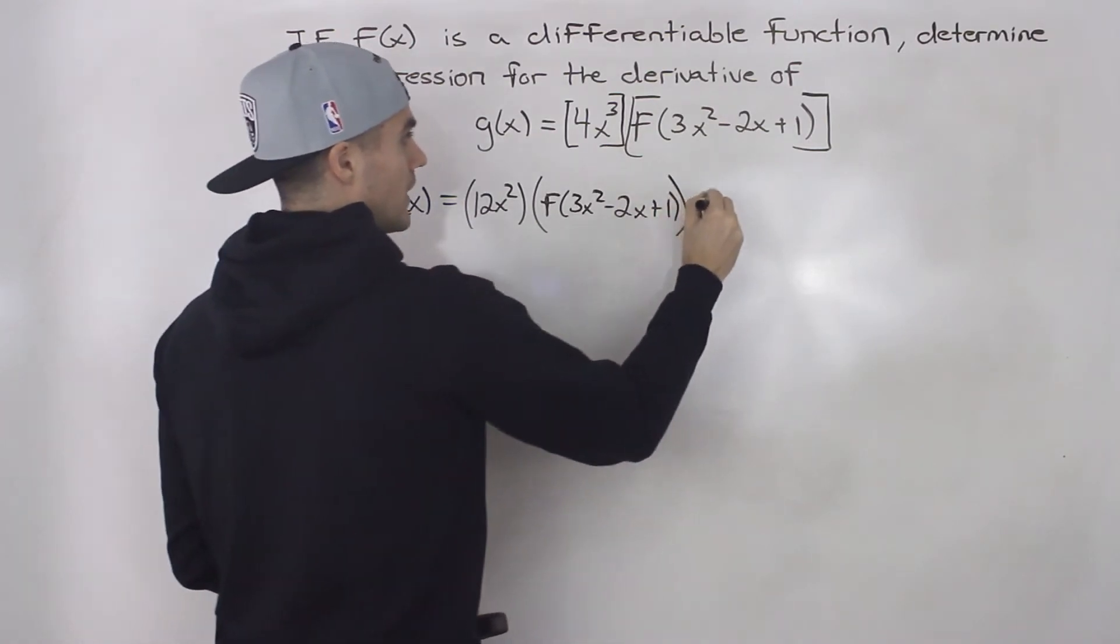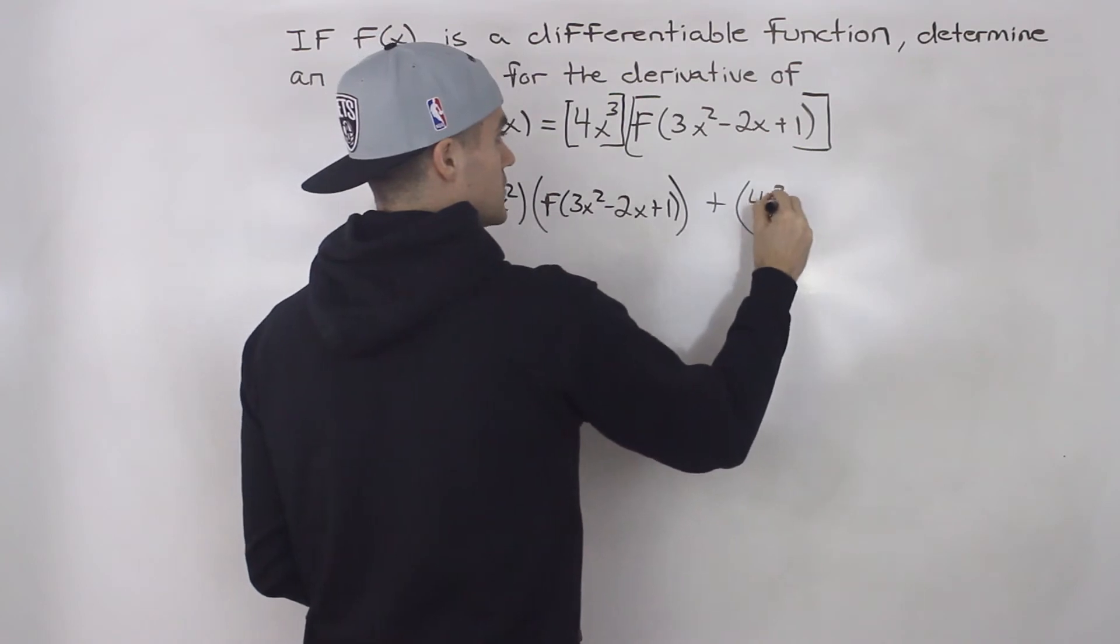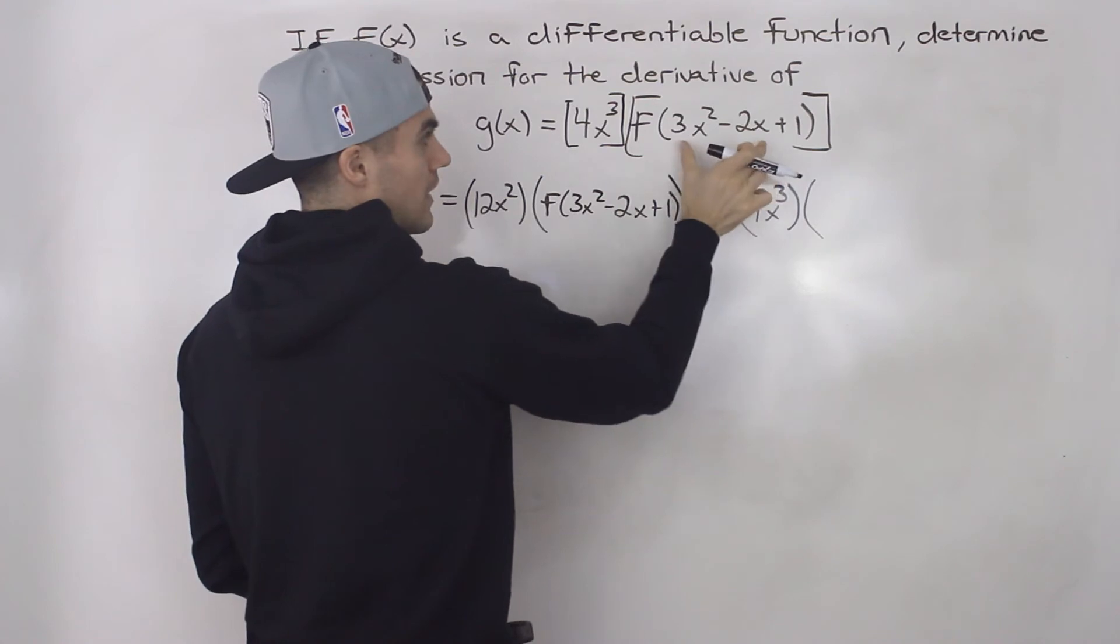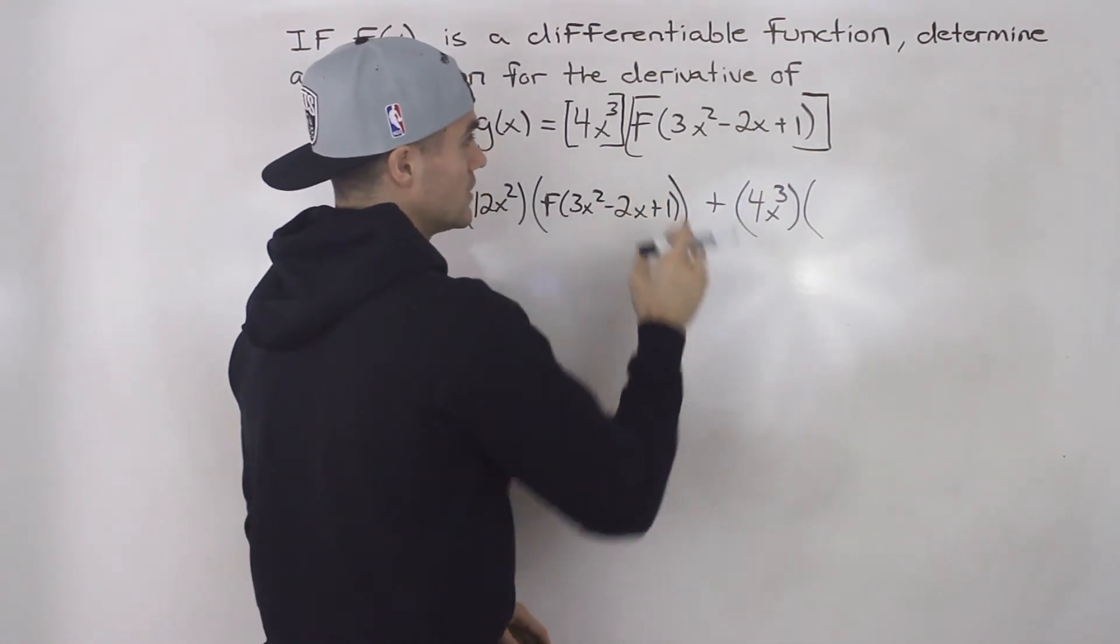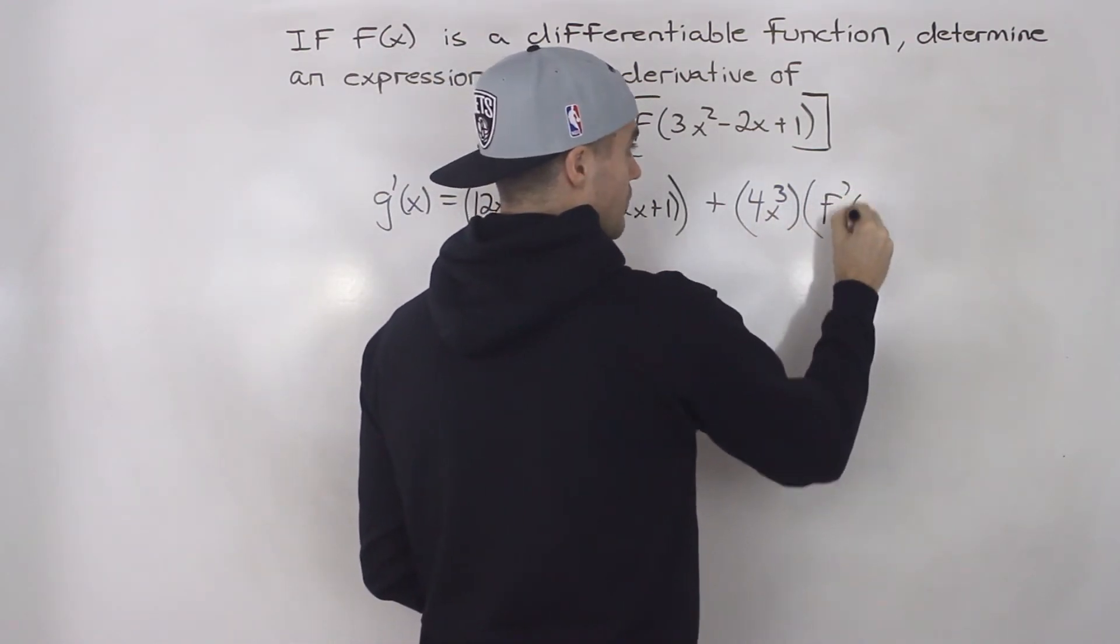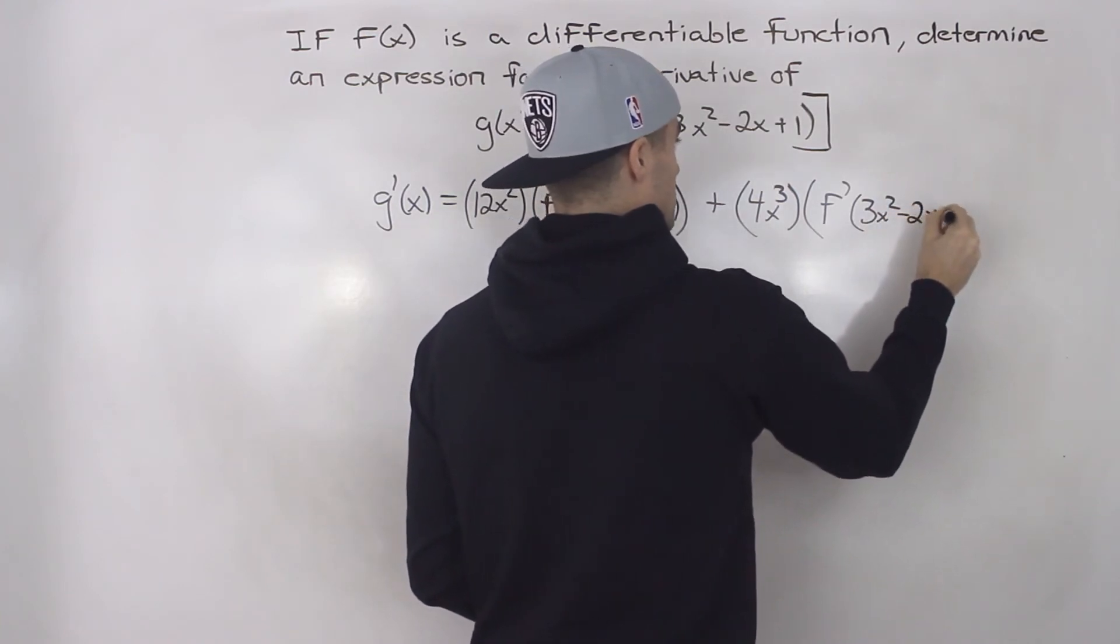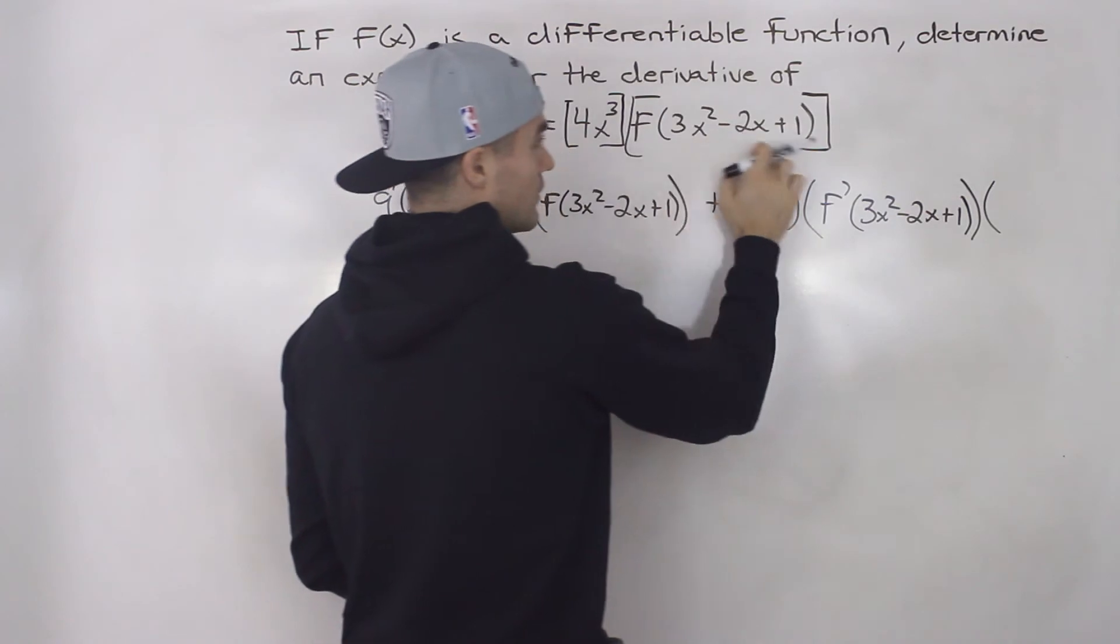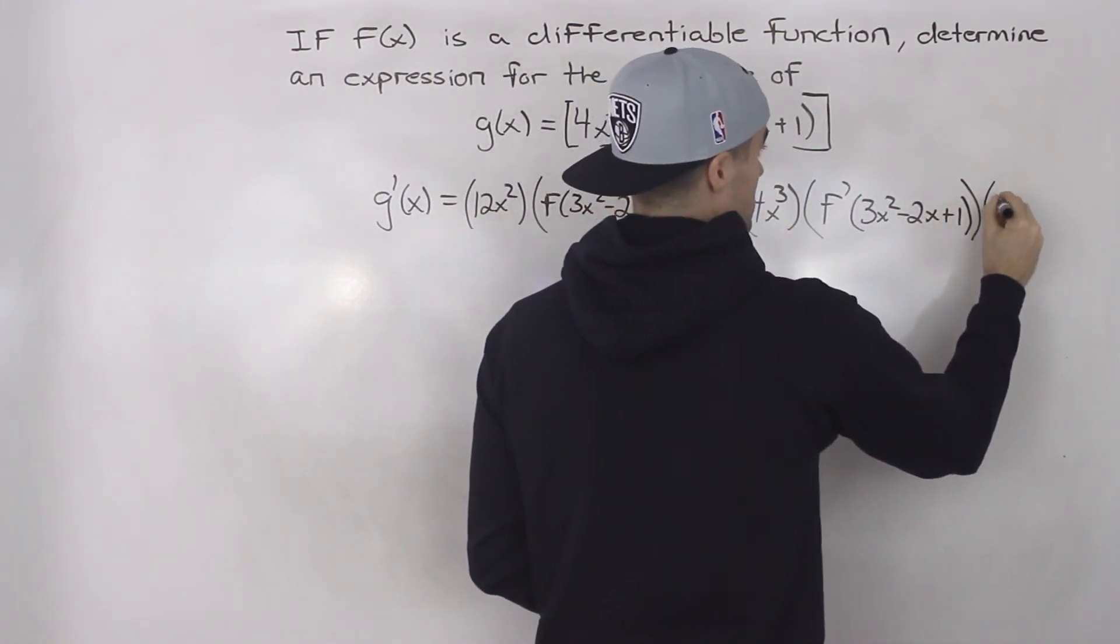Then we're going to add this function left as is, 4x³, multiplied by the derivative of this function here. Because this is a composite function, we have to apply the chain rule. So we take the derivative of the outside function first. We'd have f' of 3x² minus 2x plus 1, multiplied by the derivative of the inside function, which would just be 6x minus 2.